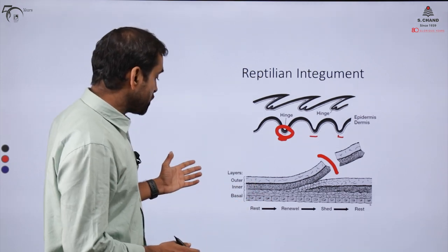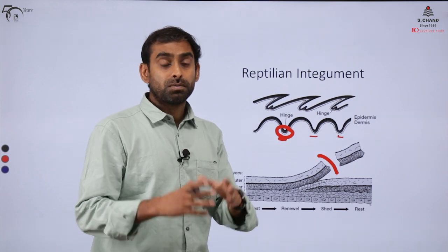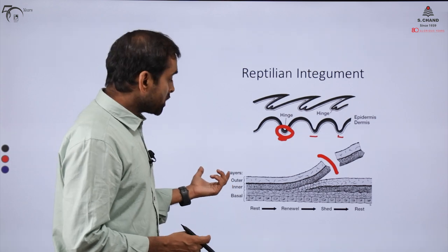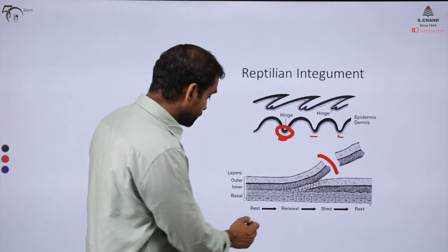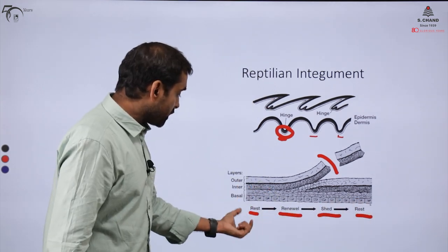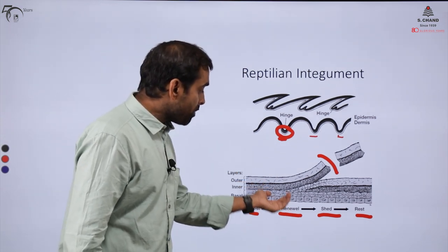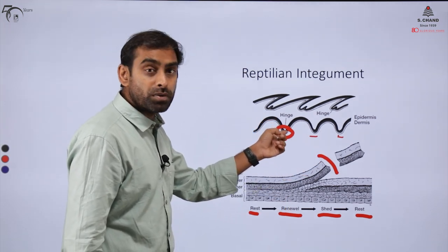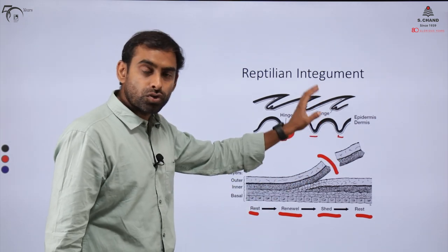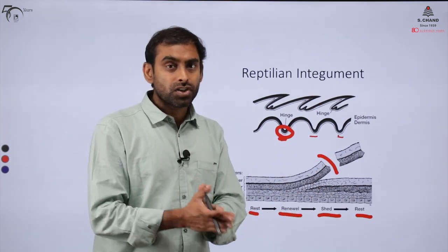Reptilian skin can also have diversity — some skins are highly tough with multiple layers of stratum corneum, while some skin types are relatively thinner. During the resting stage, the skin is normal. But when renewal happens, the upper layer goes up because of the formation of a hinge, and is gradually shed off. Some organisms shed the entire skin at once, while in others, the skin is shed gradually.